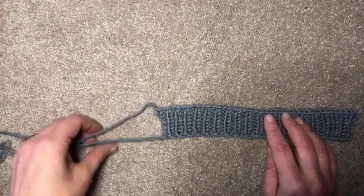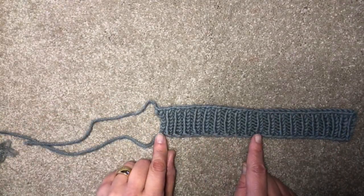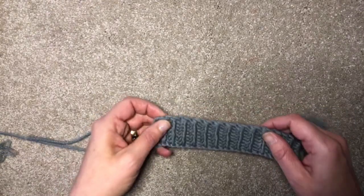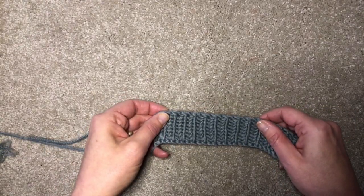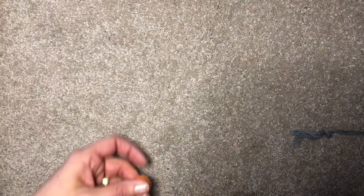You can actually create purl stitches with your long tail cast on, so that the edge is exactly the same on both sides. It goes like this.